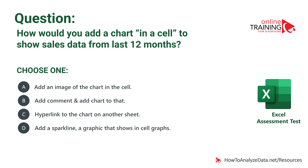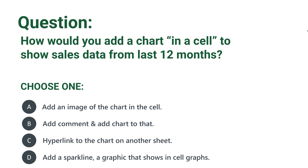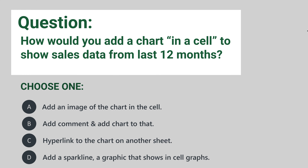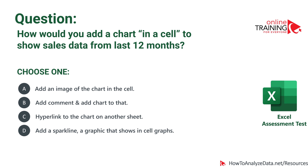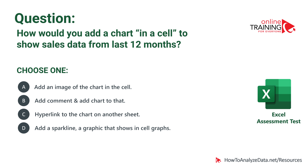Let's look at a question you might see on Indeed or LinkedIn assessments: how would you add a chart in a cell to show sales data for the last 12 months? The four choices are: add an image of the chart in the cell, add comments and add a chart to that, hyperlink to a chart on another sheet, or add a sparkline — a graphic that shows a sales graph in the cell. Which one would you choose?